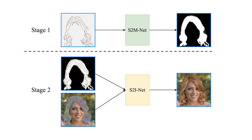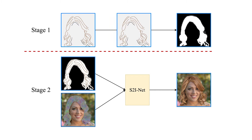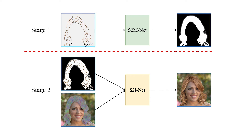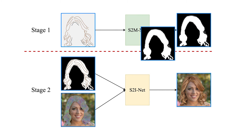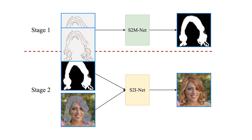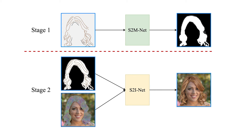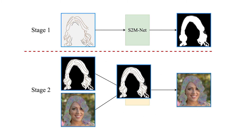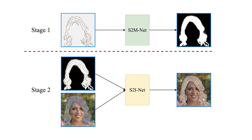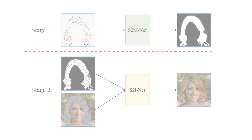The system pipeline consists of two stages. The first stage predicts a hair mat given the user's sketch input. With the sketch and the hair mat, the second stage generates the hair images blended with the original background. Based on it, we develop a sketching interface for hairstyle design.